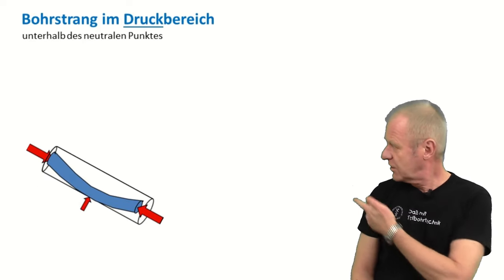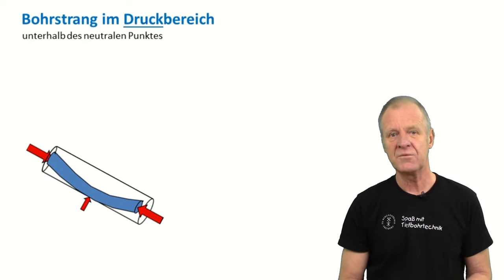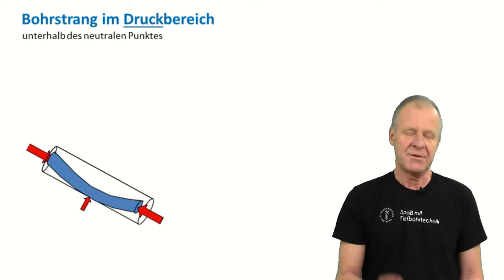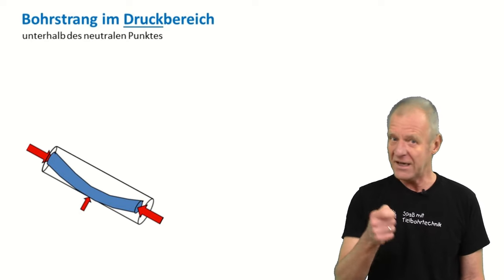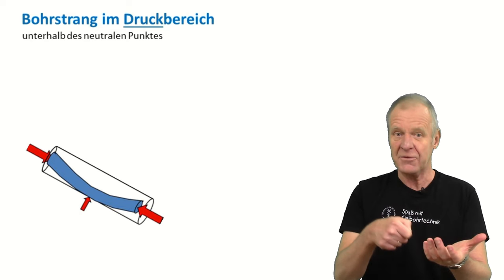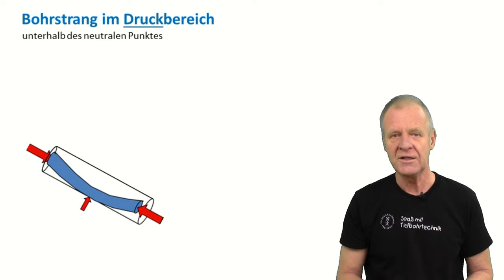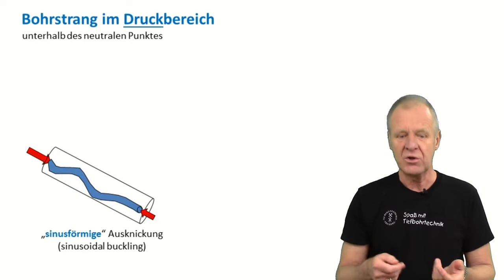If we start pushing the drill string forward, it will initially touch the borehole wall only in some few spots. But if we push harder because we need more weight on the bit to destroy the rock, then we'll see the drill string starts to snake in the borehole. It touches the wall in a sinusoidal pattern.